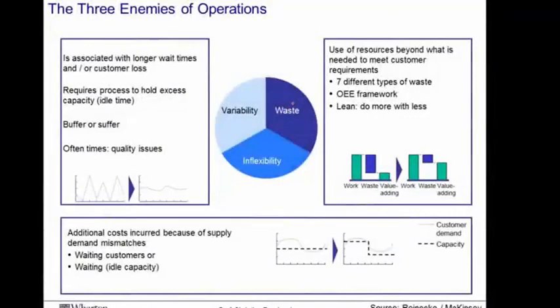In this course, we've encountered three enemies that mess up your operations. These three enemies are waste, variability, and inflexibility. We talked about the seven sources of waste and the OEE framework. The OEE framework showed us that from the available time of a machine or a human worker, a lot of the time is wasted and only relatively little time is spent as value-added. That means by reducing waste, we can get a lot more done with less resources.